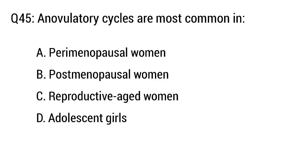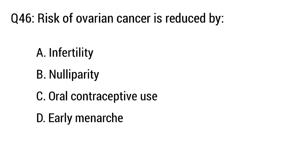Question number 45. Anovulatory cycles are most common in — the right option is option D: Adolescent girls.